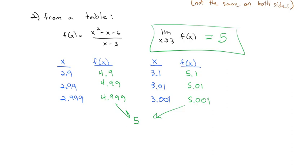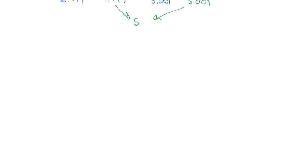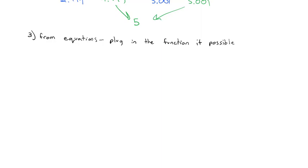The table method is nice to get an idea of what's happening near a value, but it's a very inefficient method, especially if the function starts to act really weird as we get closer to a value. So we need a more algebraic way to find the limit. The idea is we will plug the value into the function if possible, or we'll use algebra to make it possible.